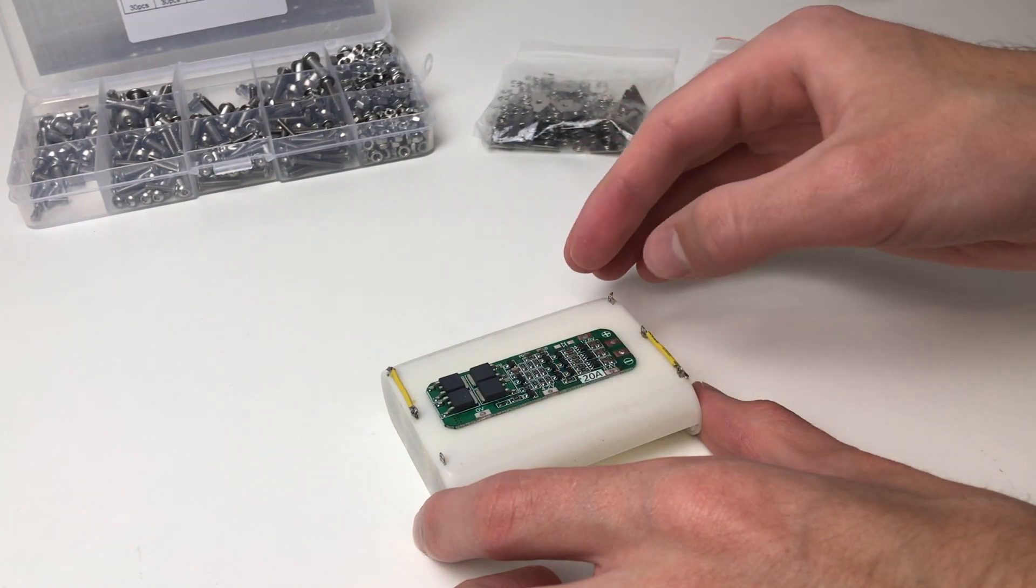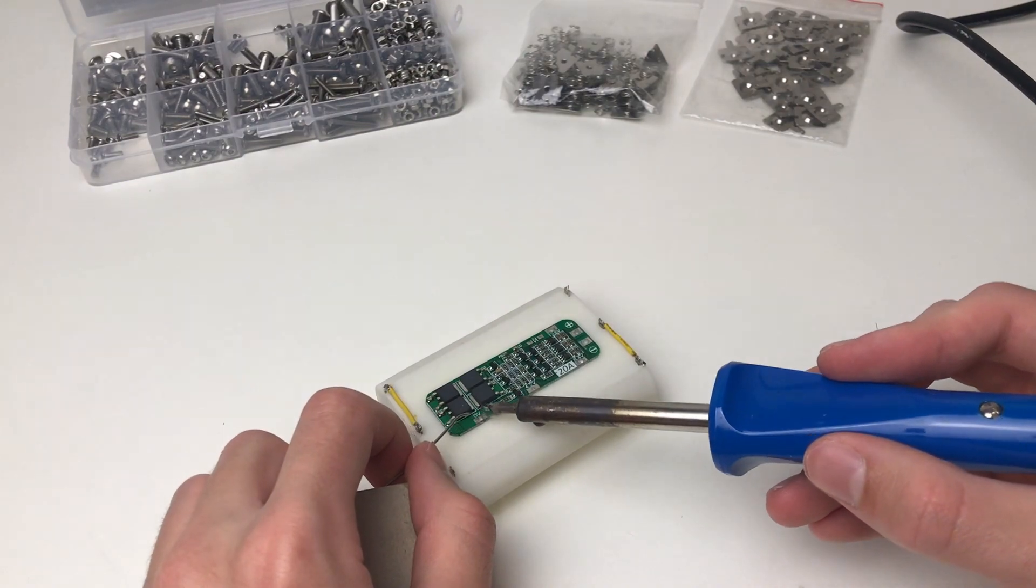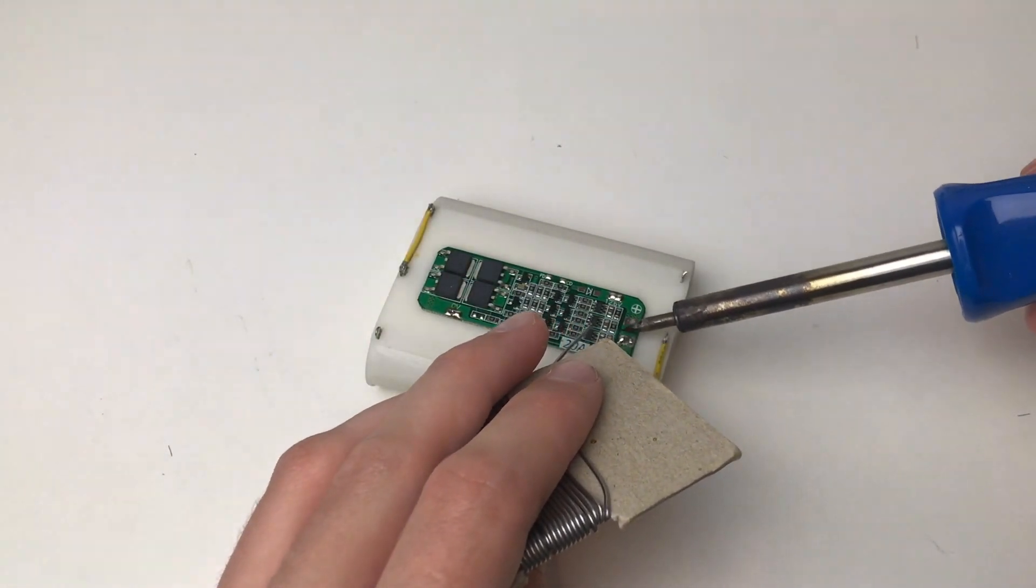For this build I'm using a 3S BMS because I'm putting three 18650 batteries in series to have an average voltage of 12 volts.